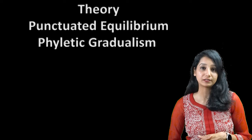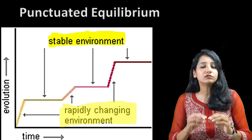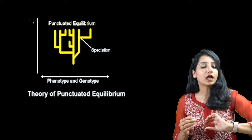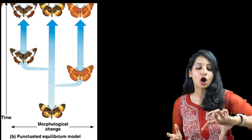There are two theories related to macro evolution. One is punctuated equilibrium and one is phyletic gradualism. Punctuated equilibrium says there is a long-term period of no change — stasis — and then there is a sudden change, which results in a new species. Long-term stasis, then a sudden new species.